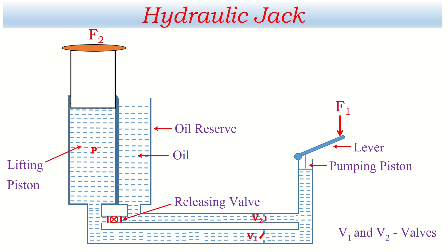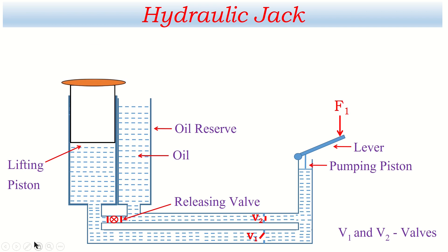Then we have to bring the lifting piston back down. For this, we open the releasing valve. When the releasing valve is opened, the lifting piston moves downward and the work of the hydraulic jack is finished. So the hydraulic jack is used to change the wheel of the vehicle — it is based on Pascal's law, it magnifies the force, and helps us change the wheel. This is a simple explanation of the hydraulic jack with diagram and working principle.